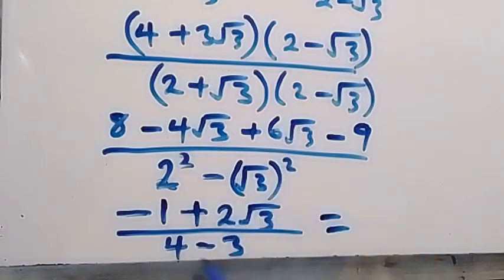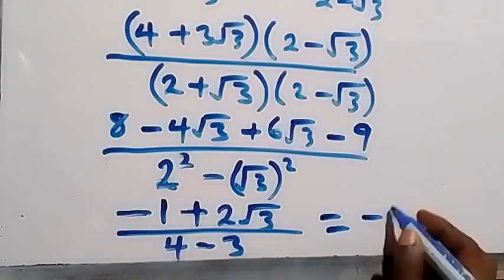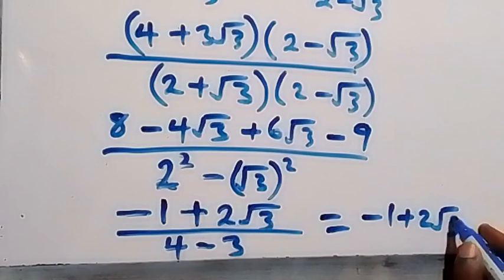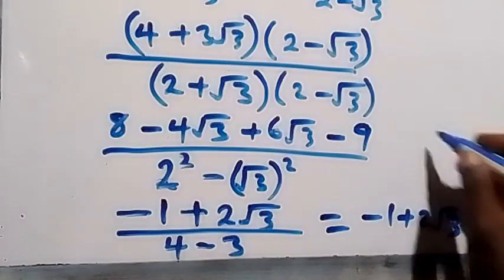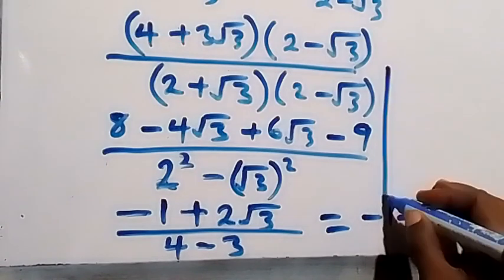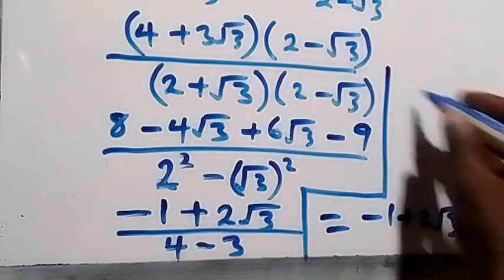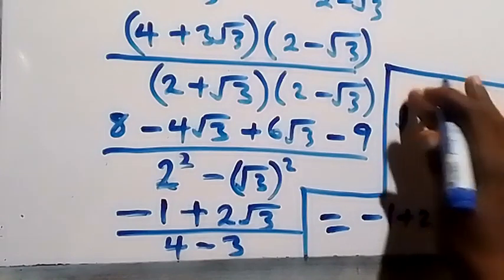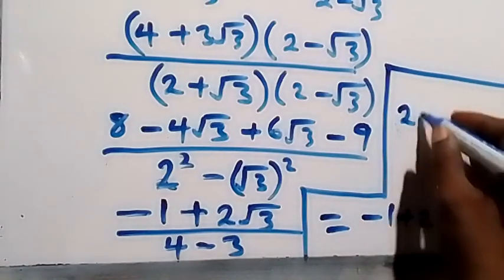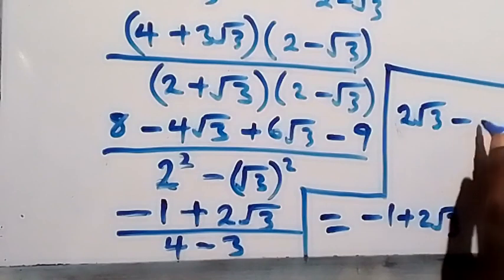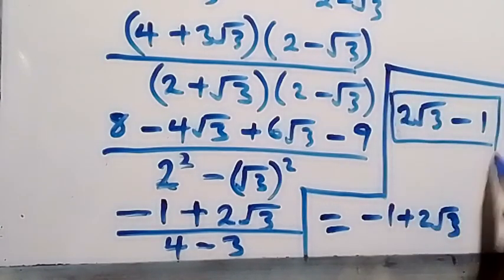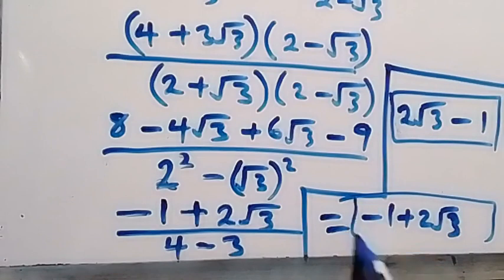So what we have is simply minus 1 plus 2 root 3, which we can also write in another way. Writing 2 root 3 first, we get 2 root 3 minus 1. So this is our final answer. Whichever way we write it, we have 2 root 3 minus 1.